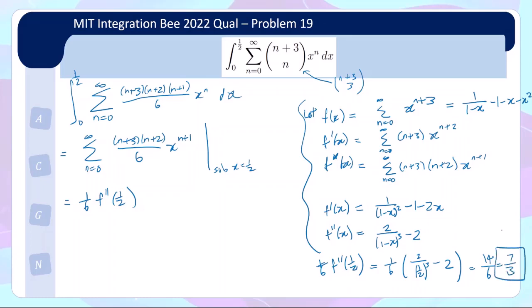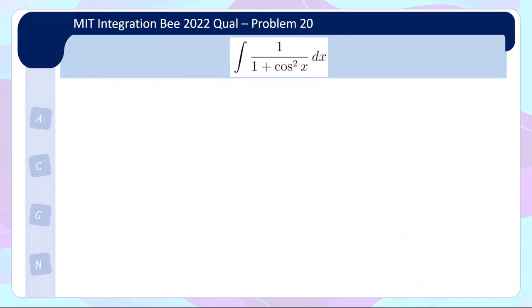A really cool problem that uses the classic method of writing an infinite series in closed form and differentiating it to find the sum of another series. The answer is 7/3. On to the last problem — definitely give it a shot. This is yet another classic integral with lots of videos on YouTube. It is a substitution problem where the substitution is not so apparent at first.